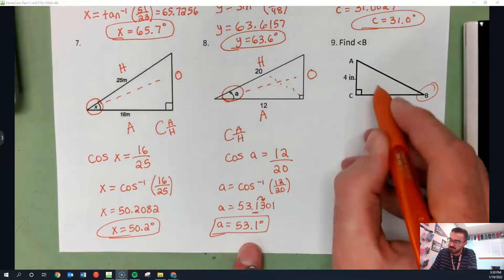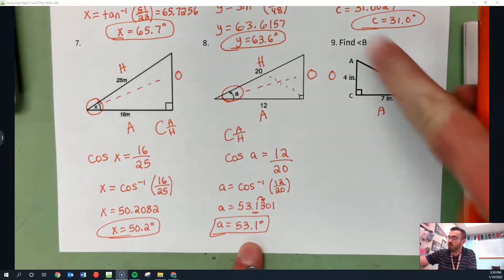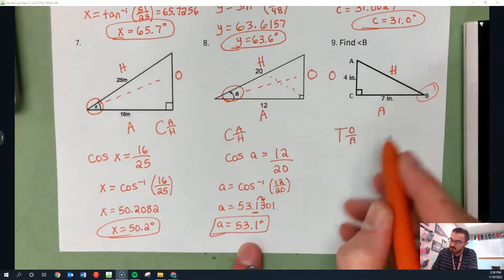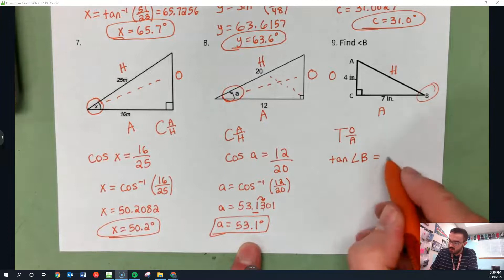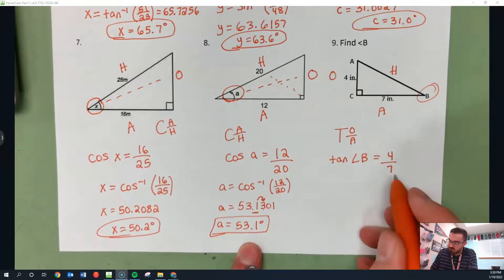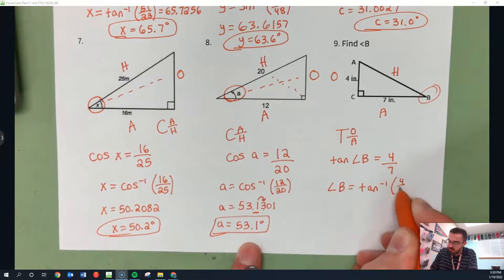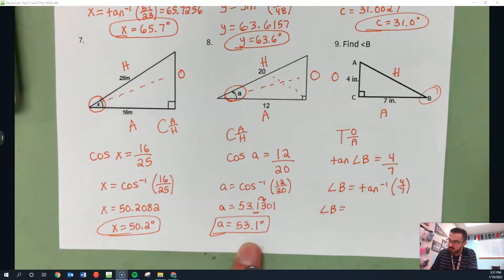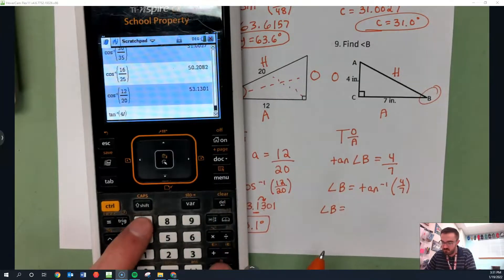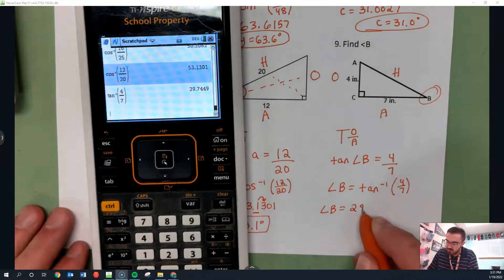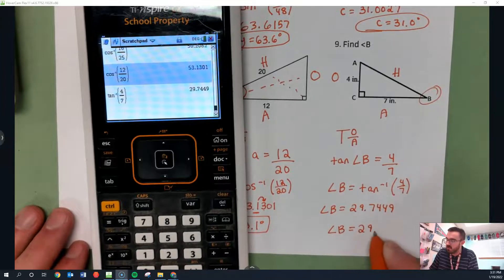Angle B: opposite, hypotenuse, adjacent. Cross out H — we're left with O and A, which is TOA. Tangent of angle B equals O over A, which is 4 over 7. Angle B equals inverse tangent of 4 over 7, giving 29.7449 — so angle B equals 29.7 degrees.